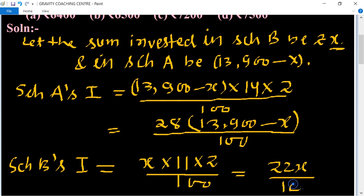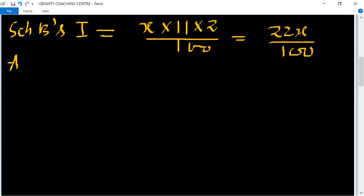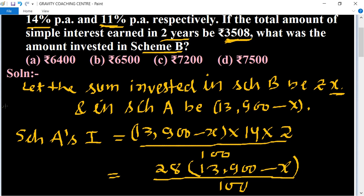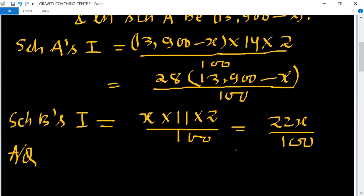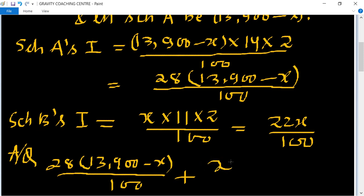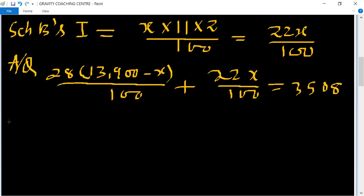And according to the question, the total simple interest amount is ₹3,508. So now we add scheme A's interest and scheme B's interest. Scheme A's interest is 28(13,900 minus X) upon 100, plus scheme B's interest 22X upon 100, and total interest equals ₹3,508.